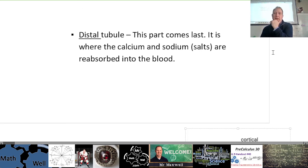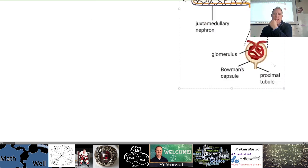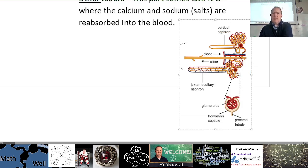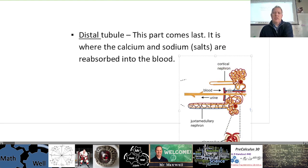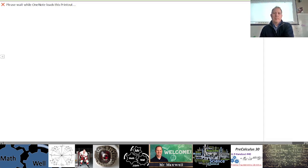The distal tube comes last — it's where calcium and sodium, the salts, are reabsorbed into the blood. So you have the glomerulus, then the PCT, then Henle's loop, then the distal tube. The good stuff gets reabsorbed back into the blood and the bad stuff continues along into the urine. There's an exchange basically happening there — the blood vessels and capillaries are wrapped around the loop, the good stuff stays, and the bad stuff becomes urine.